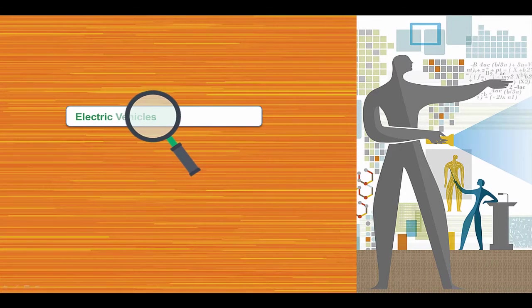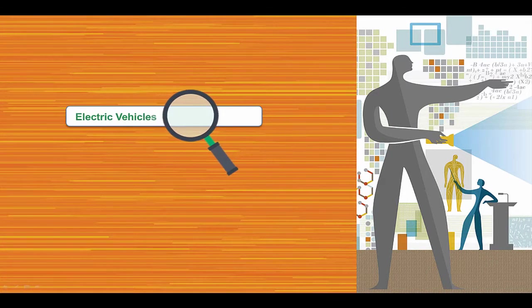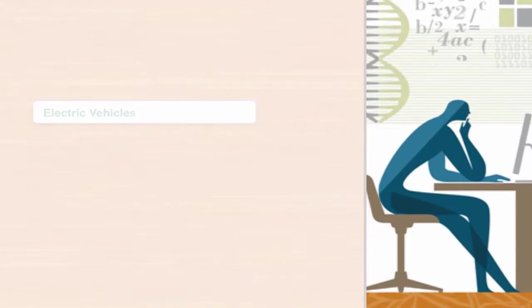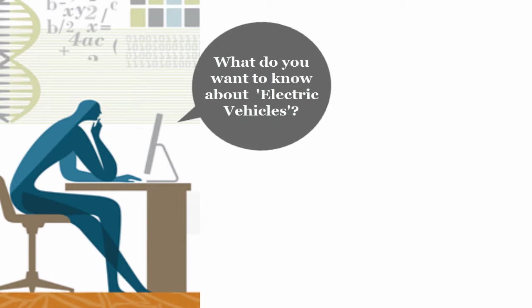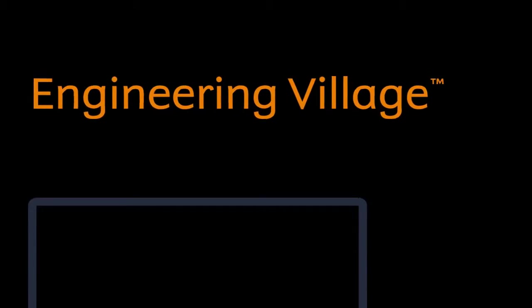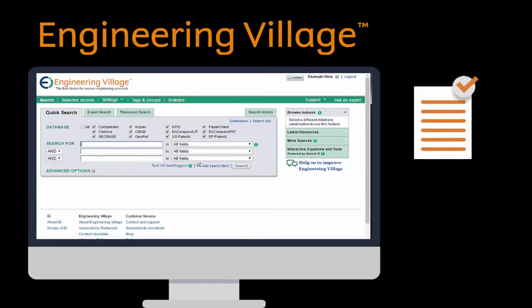You're researching electric vehicles — where will you go to find the information you need? Do you know exactly what you are looking for? Will a simple search in a simple search box get you there? And how will you know you haven't missed any essential research? Are you just going to end up down a rabbit hole? Engineering Village can get you to the right research in a way so you can easily see the path you are following.